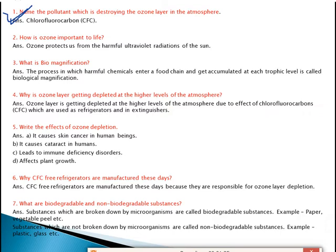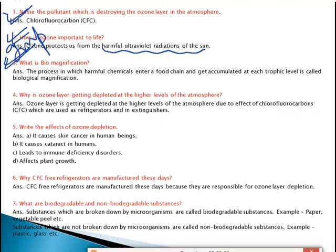Next question: how is ozone important to life? Ozone acts as a blanket for our atmosphere — it protects us from the harmful UV radiations of the sun. That's why ozone is important for all living organisms, whether plants, animals, or human beings. The function of the ozone layer is to protect us from harmful UV radiations of the sun.